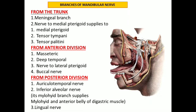The branches from the anterior division are mainly motor: the masseteric nerve to the masseter muscle, the deep temporal nerve to the temporalis muscle, the nerve to lateral pterygoid supplying the lateral pterygoid muscle, and the buccal nerve — which is sensory — supplying the buccal mucosa.